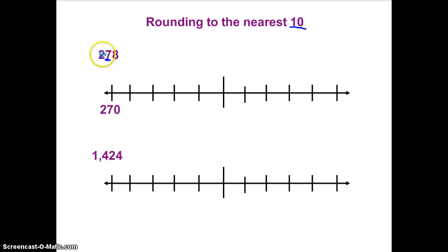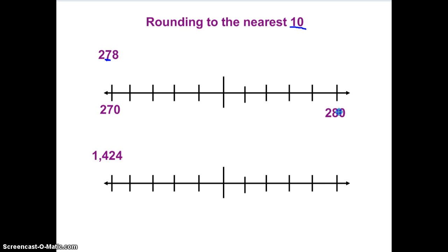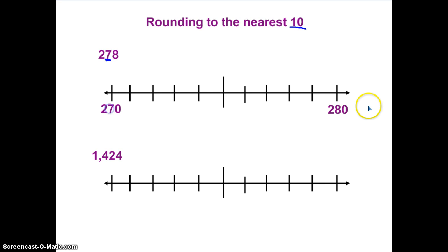The 200 stays the same because that's part of the number — 270. So I'm asking myself, is this number closer to 270, or the next ten up here, which is 280? Here's my number line. Let's double check — I have ten spaces. So here I have 270 and here I have 280 on my number line.